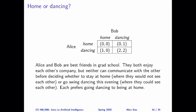What I'm showing you here is a two-person normal form game. In a normal form game, we have a set of players. In this case, we have two players. Alice is the row player, and Bob is the column player. Each player has a set of actions — in this case, each player only has two actions. Alice's two actions are represented by the two rows: the top row is staying at home, and the bottom row is going dancing. Bob's two actions are represented by the two columns: the left column represents staying at home, and the right column represents going swing dancing.